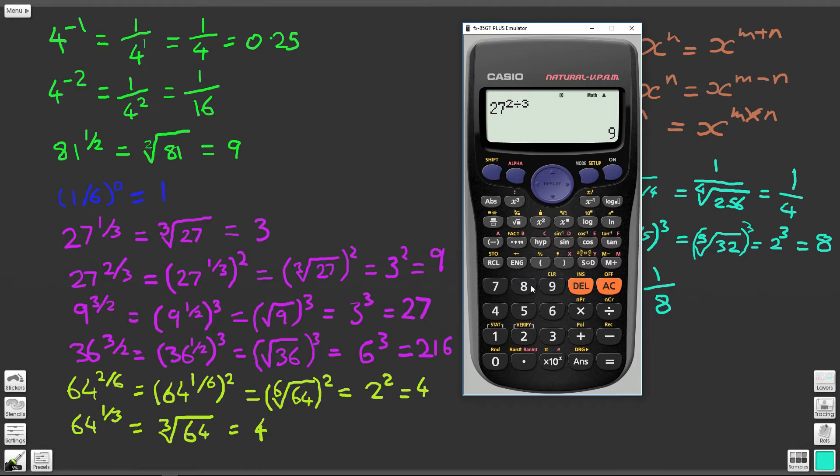Now we'll do this one. 9 to the power of 3 over 2. 9 to the power of 3 over 2 equals 27.